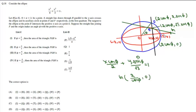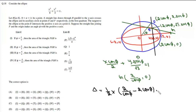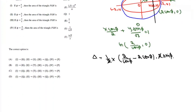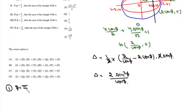Now we have coordinates of G, H, and F, so we can write the area of triangle FGH. The area = (1/2) × GH × height = (1/2) × (2/cosφ − 2cosφ) × 2sinφ. Simplifying, the 2s cancel, and since 1 − cos²φ = sin²φ, the area Δ = 2·sin³φ/cosφ.